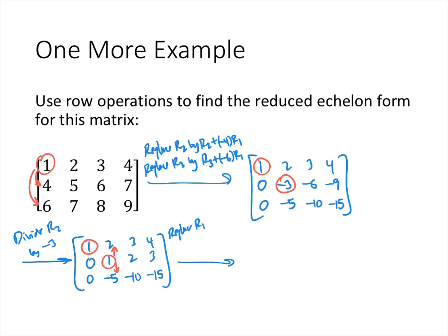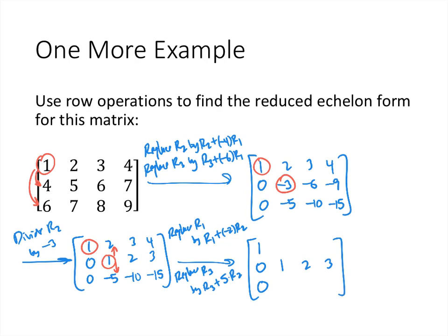We replace row 1 by row 1 plus negative 2 times row 2, which cancels the 2 and gives a zero. We also replace row 3 by row 3 plus 5 times row 2, which cancels the negative 5 and gives a zero. These operations don't change the first column or row 2. Multiplying row 2 by negative 2 and adding to row 1 gives 0, negative 1, and negative 2 in those positions. Multiplying row 2 by 5 and adding to row 3 gives zeros all the way across. The third row is now all zeros, so there are no more pivots. This matrix is in reduced echelon form with two pivots in the first and second columns.